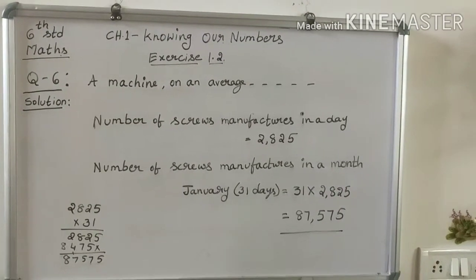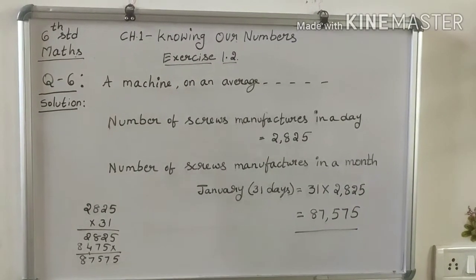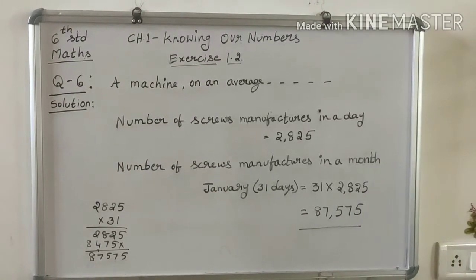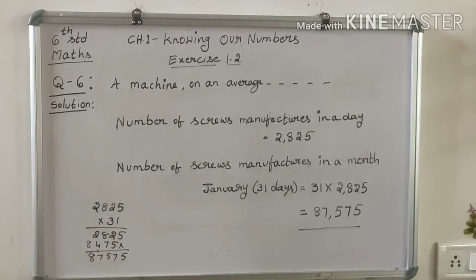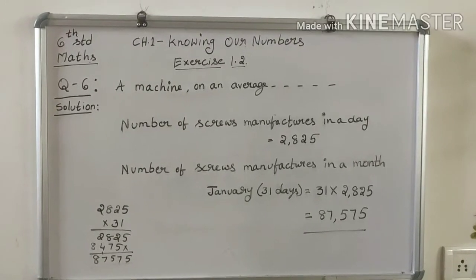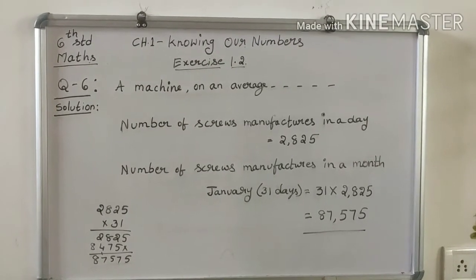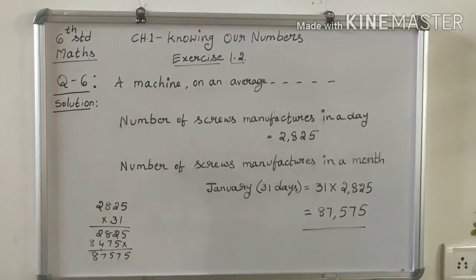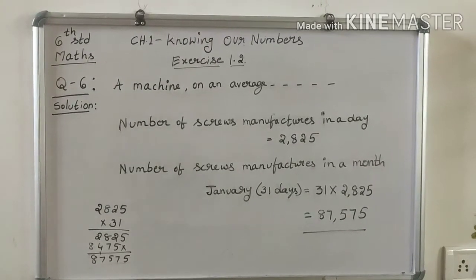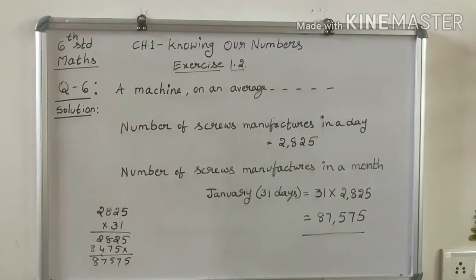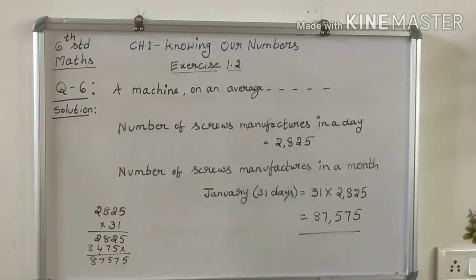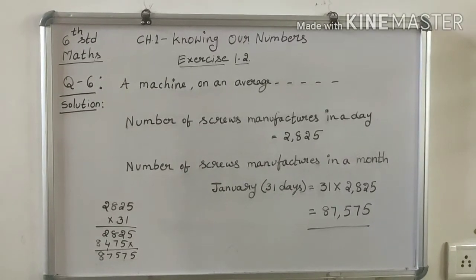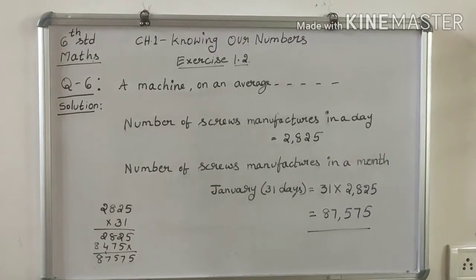Next, Question number 6. First, read the question: A machine on an average manufactures 2,825 screws a day. How many screws did it produce in the month of January 2006?